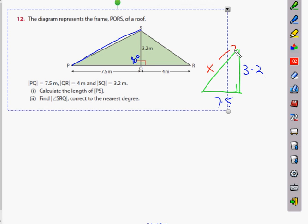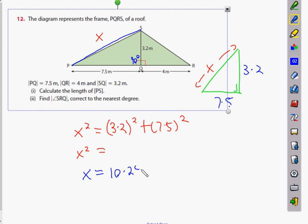Can anybody tell us how we can find out what PS is? Pythagoras theorem. So tell me what to write down. X squared equals 3.2 squared plus 7.5 squared. And then what do we get? Everybody into the calculator with that, 3.2 squared, 7.5 squared, square root it? What's 3.2 squared plus 7.5 squared? It's 10.24 plus 56.25.